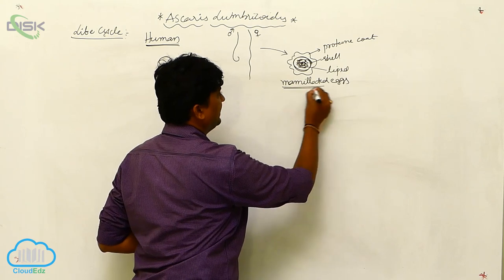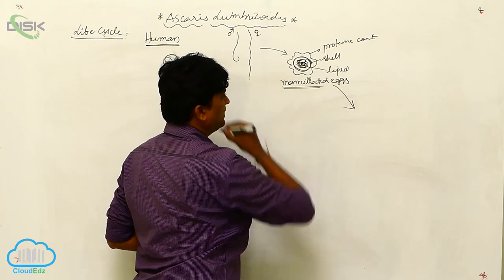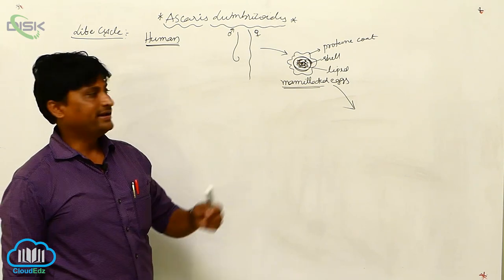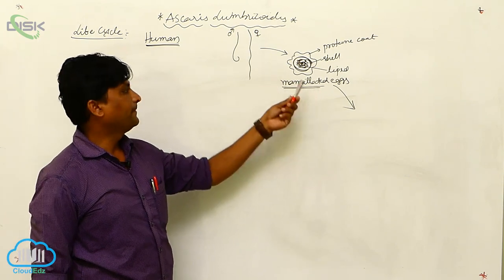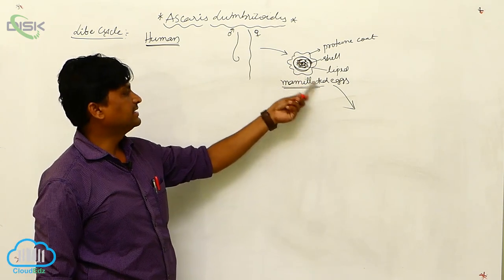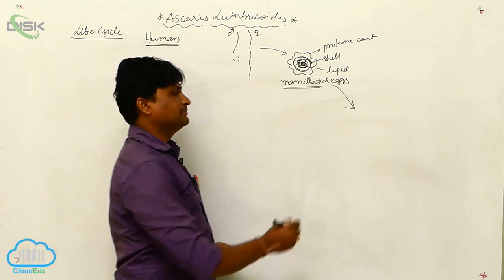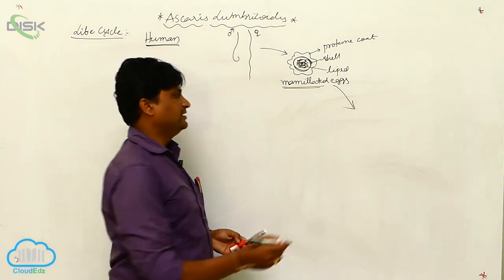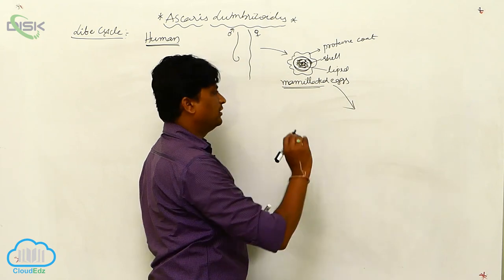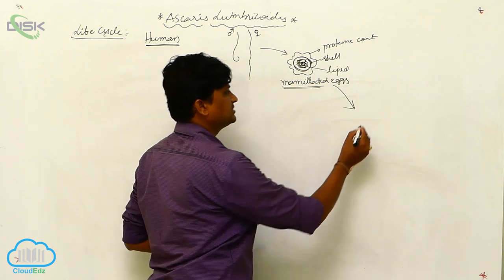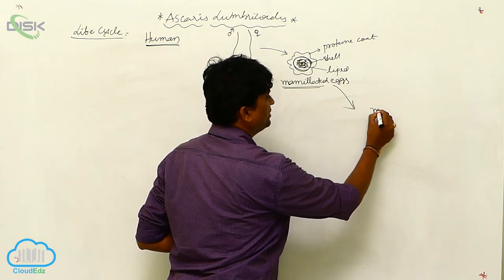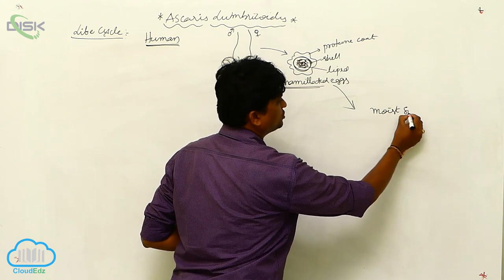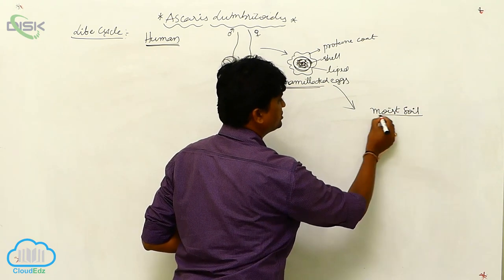These mamillated eggs are produced by Ascaris lumbricoides at 2 lakh per day. The mamillated eggs, along with the fecal material, are eliminated to the outside through feces.